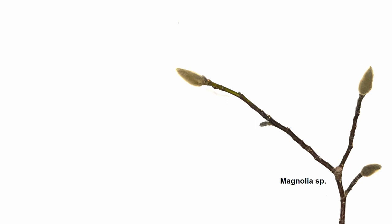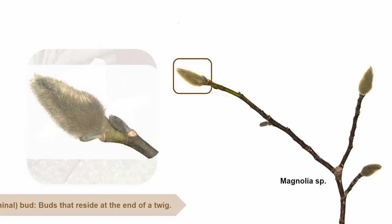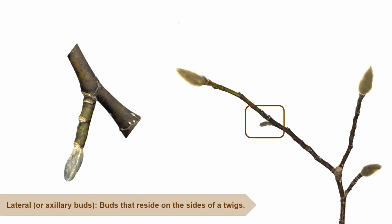Let's go ahead and look at some sticks. Here is a twig from a magnolia tree, which we're going to use to learn how to distinguish apical and lateral buds on a twig. In case you aren't familiar with what a magnolia tree looks like, they produce these beautiful pink flowers in the early spring. Apical, or terminal buds, are buds that reside at the end of a twig. On a magnolia twig, the apical buds are large and they are really pubescent. Lateral, or auxiliary buds, are buds that reside on the sides of twigs. On a magnolia twig, the lateral buds are not as large or as pubescent as the terminal buds.